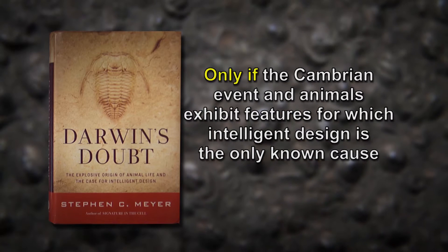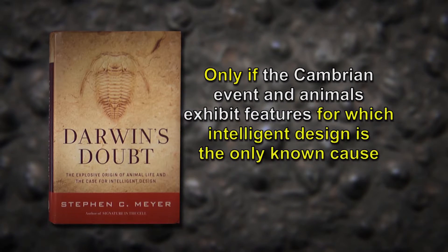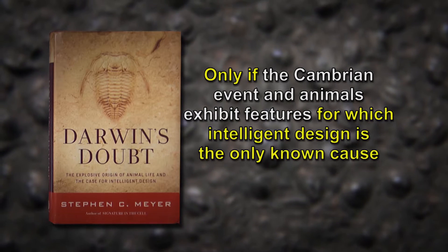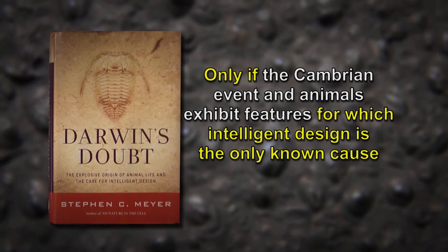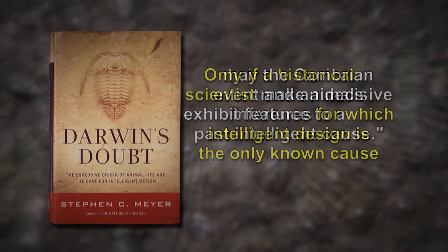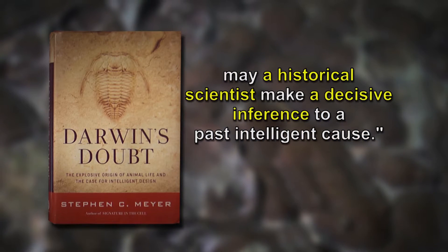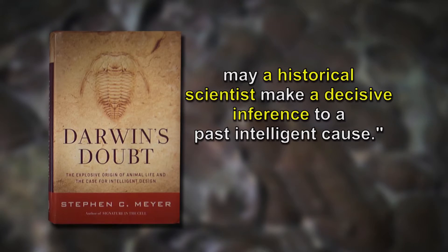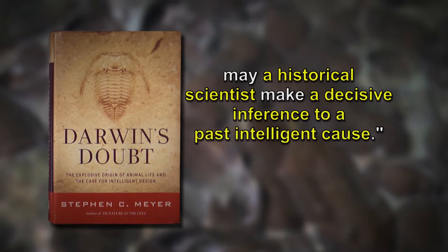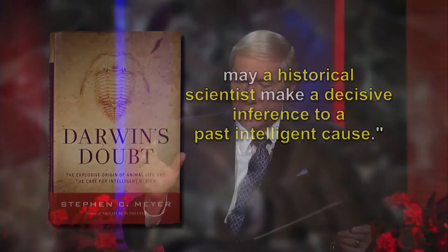Only if the Cambrian event and animals exhibit features for which intelligent design is the only known cause may a historical scientist make a decisive inference to a past intelligent cause. I think that's a very important statement. Explain what you're saying.